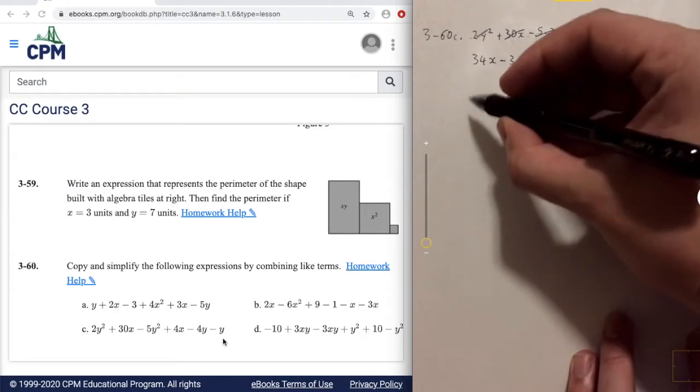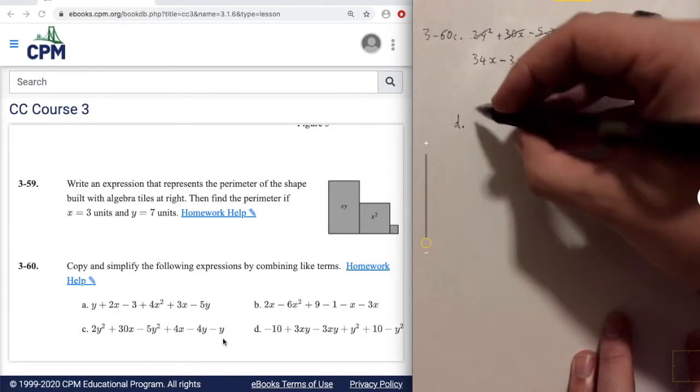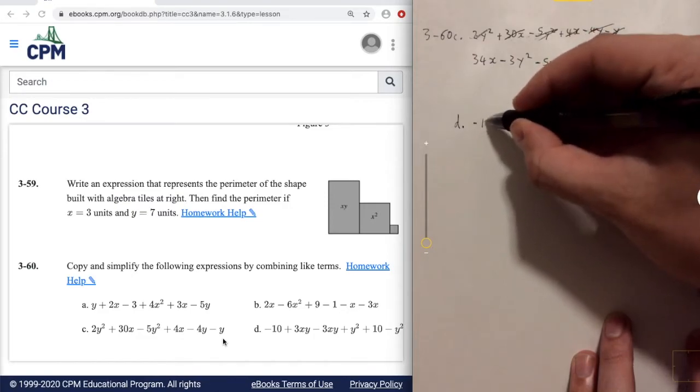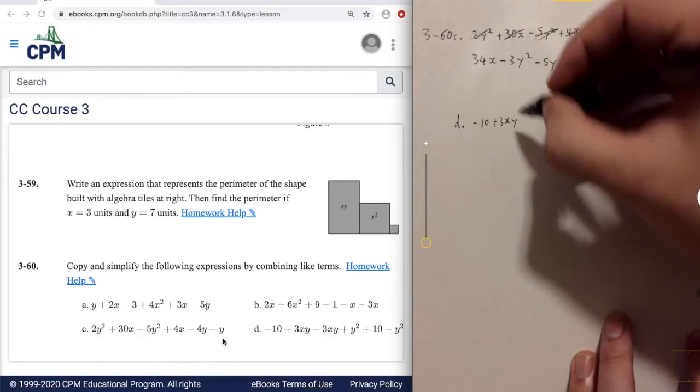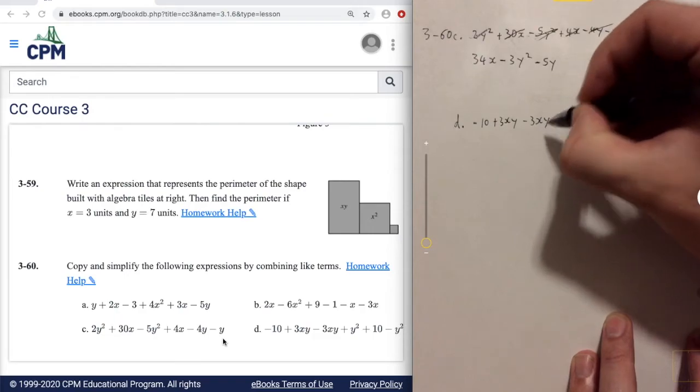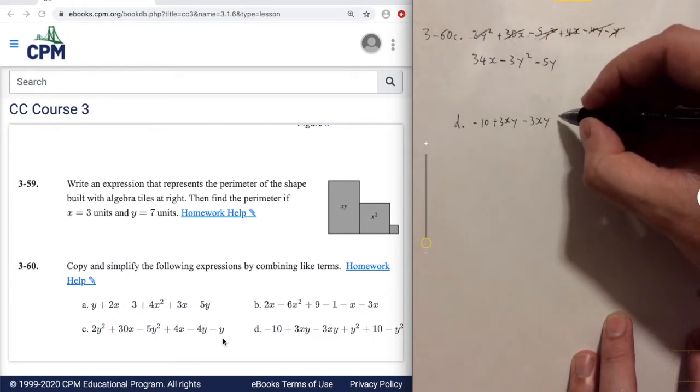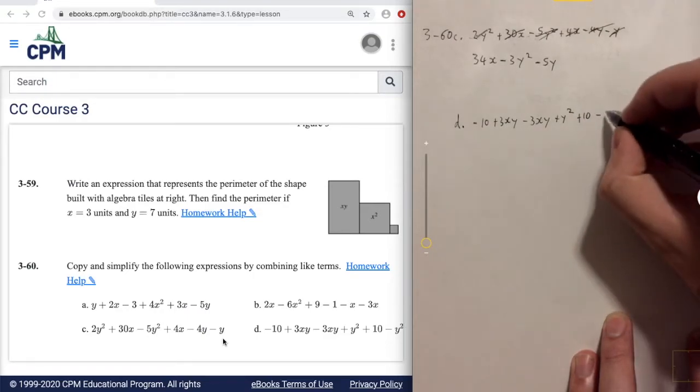So let's do part D as well. So we'll write out the expression. It'll be negative 10 plus 3xy minus 3xy plus y squared plus 10 minus y squared.